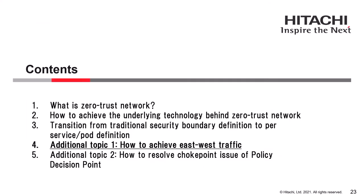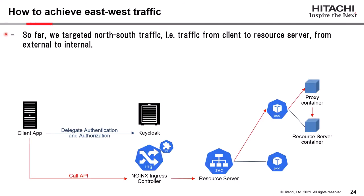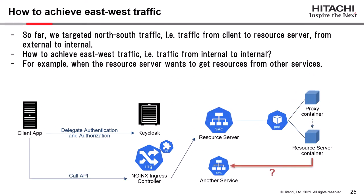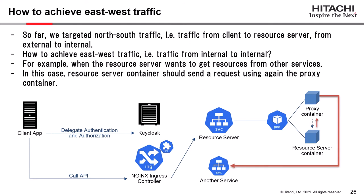Moving to additional topic 1: how to achieve east-west traffic. So far, we targeted north-south traffic — traffic from a client application to the resource server, from external to internal. The client application calls APIs of the resource server through the NGINX Ingress Controller and the proxy container. East-west traffic means traffic from service to service, that is, internal to internal. This traffic is needed, for example, when the resource server wants to get resources from other services. In this case, the resource server container simply sends a request using, again, the proxy container.